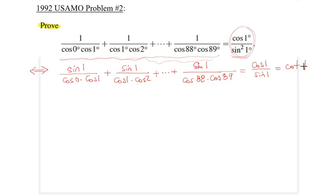This equals cosine 1 over sine 1, which is cotangent 1. As I said, I would like to come up with a telescoping argument. In fact, I can represent sine 1 in the first fraction as 1 minus 0, to liken it to the expressions in the denominator. Similarly, sine 1 here would be 2 minus 1, and this one would be 89 minus 88 degrees.